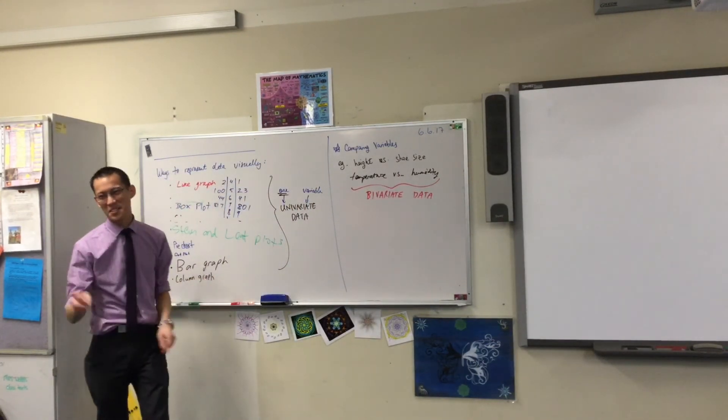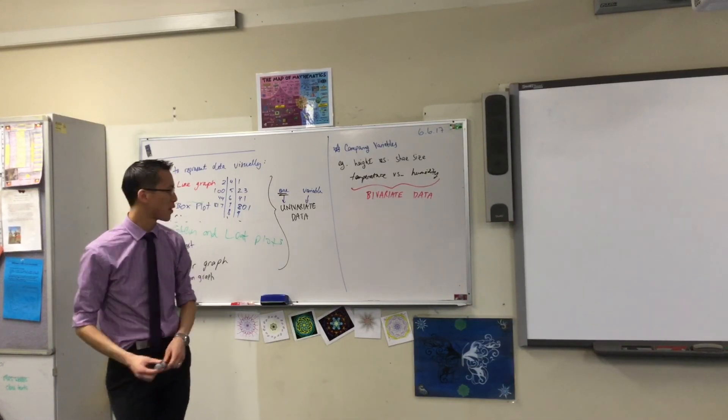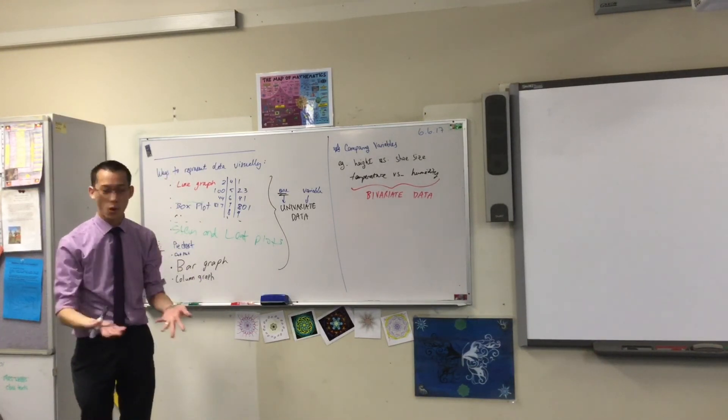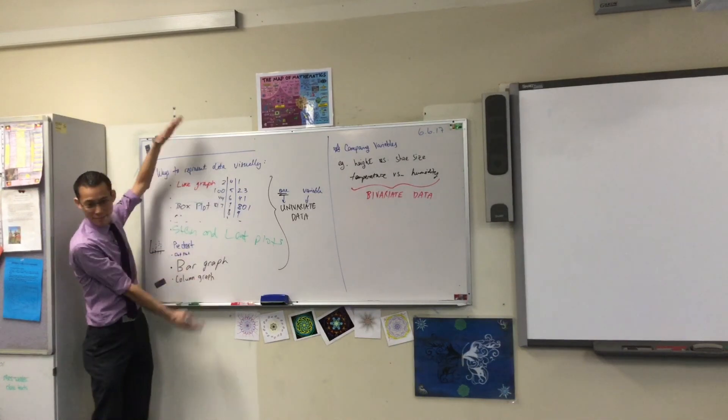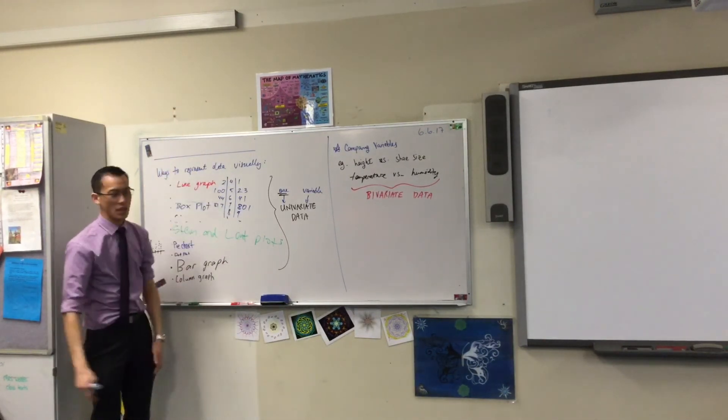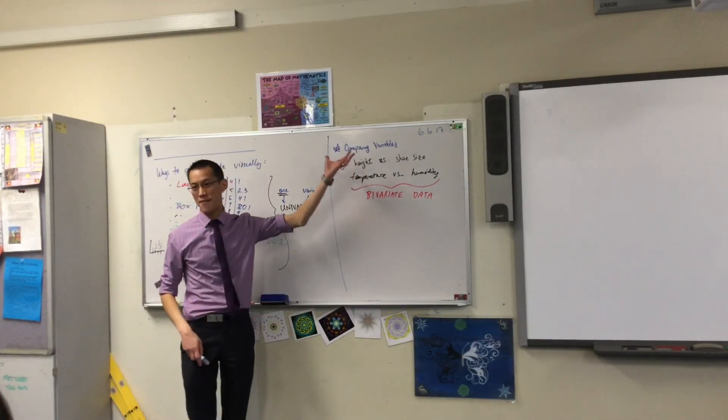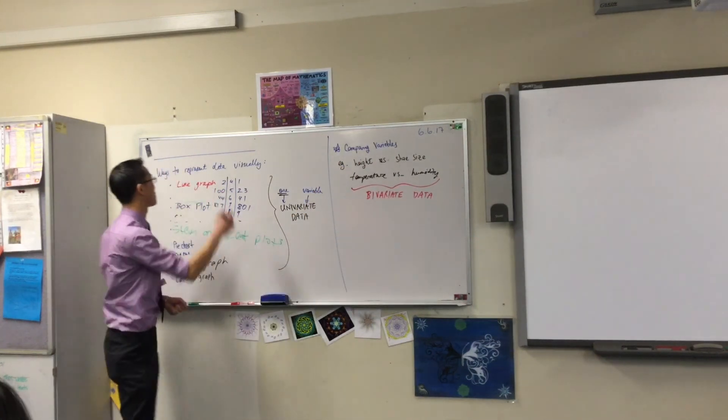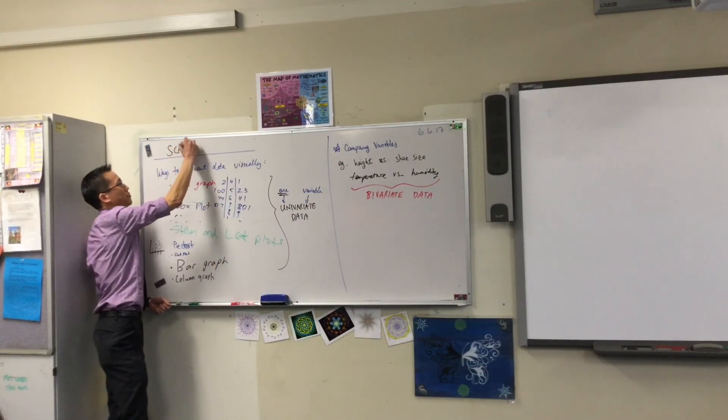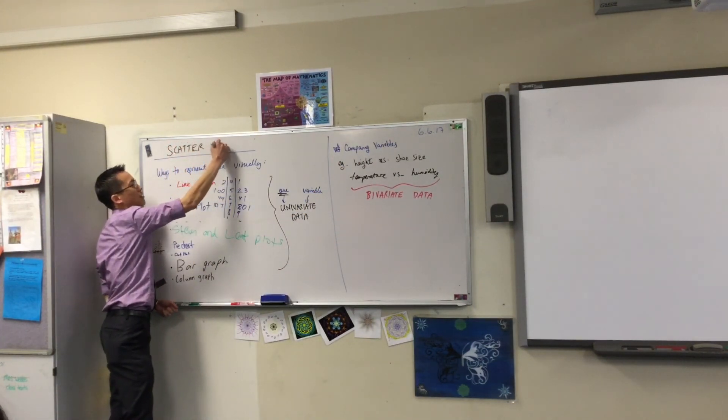There's the same, right? You have two variables here you're interested in both. Now the tool of choice around this whole big menagerie of different things that you can use, the tool of choice to represent bivariate data, here's your heading, is what we call a scatter plot.